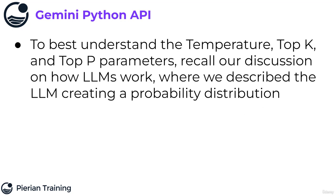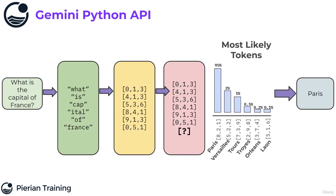To best understand the more complex parameters — temperature, top K and top P — let's recall our discussion of how LLMs work from the start of the course, where we described the LLM creating a probability distribution. Recall this process of going from words to tokens to vectors to creating a probability distribution that we can sample from for the next most likely token. Temperature, top K and top P all play around with this probability distribution.